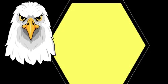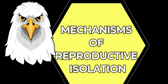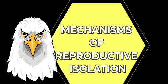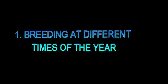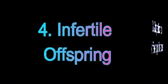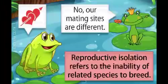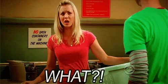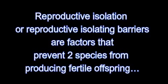This video will highlight a brief outline of reproductive isolation mechanisms that help to keep species separate, such as breeding at different times of the year. We will look at species-specific courtship behavior, adaptation to different pollinators, infertile offspring, as well as prevention of fertilization. Reproductive isolation, or reproductive isolating barriers, are factors that prevent two species from producing viable or fertile offspring.